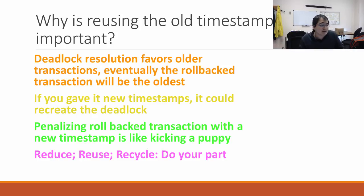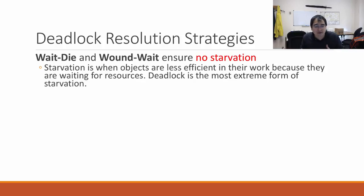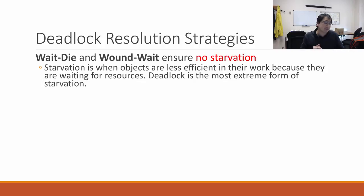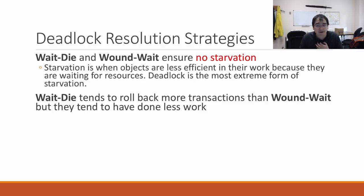Let's compare these strategies. Wait-die and wound-wait both ensure no starvation — starvation is when transactions can't do their work because they're waiting for resources like locks. Deadlock is the most extreme form of starvation. When would you choose wait-die versus wound-wait? Wait-die tends to roll back more transactions, because younger ones instantly die whenever they can't get a lock.